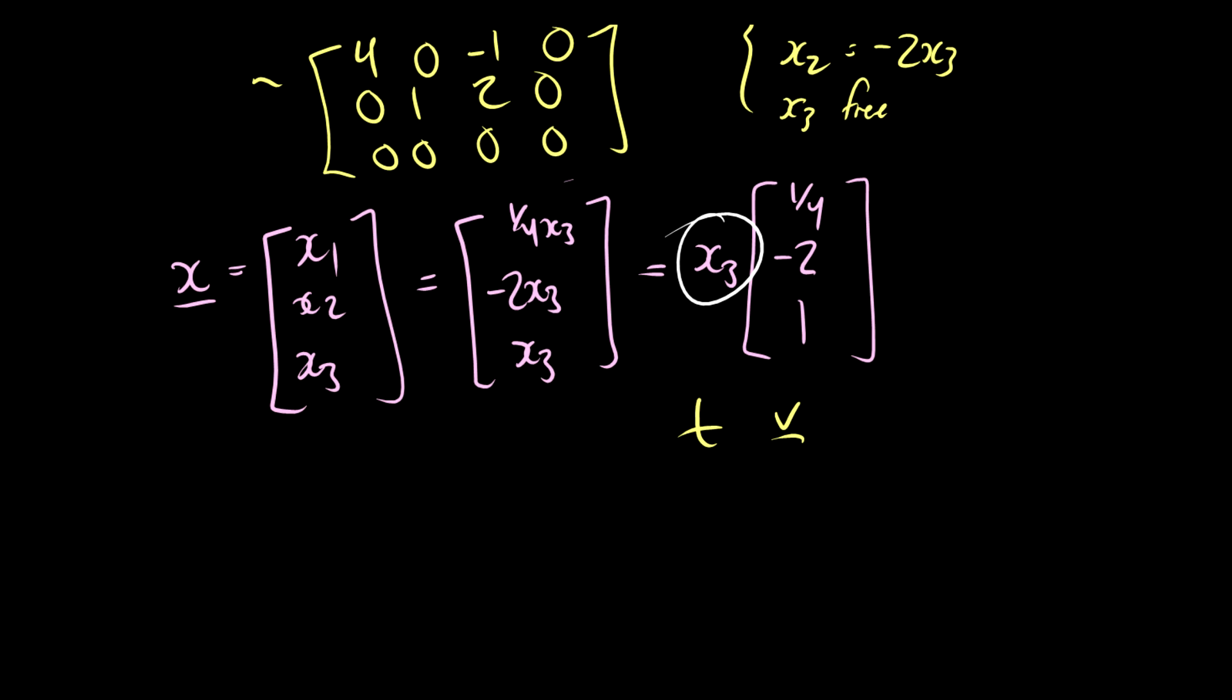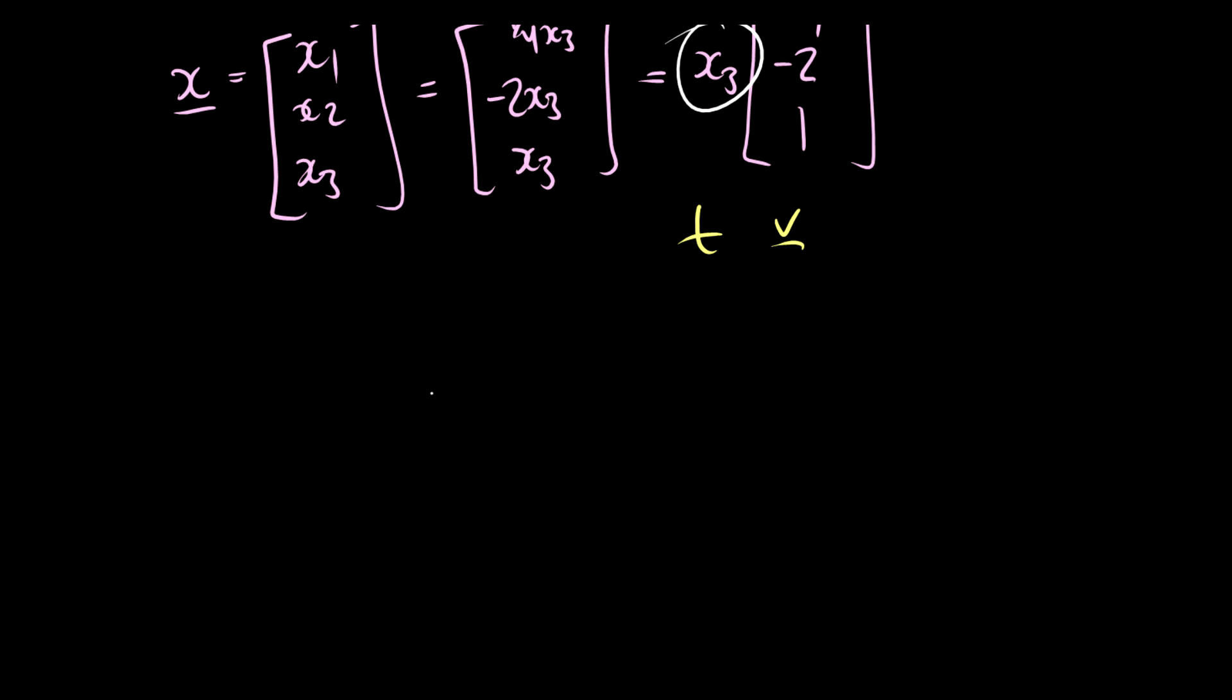So if we can write a solution, write this as x is equal to a constant times a vector, then that is called parametric form. x is equal to a constant times a vector. This is called parametric form. So we can write all homogeneous solutions as a parametric form.